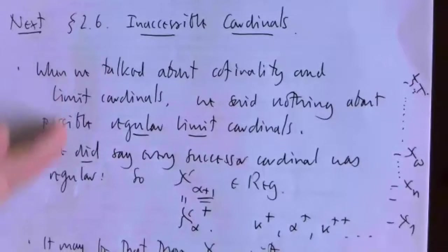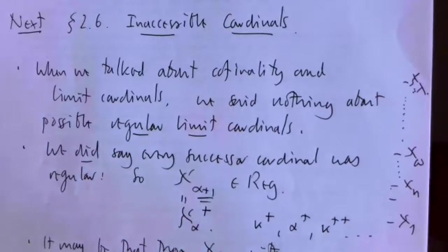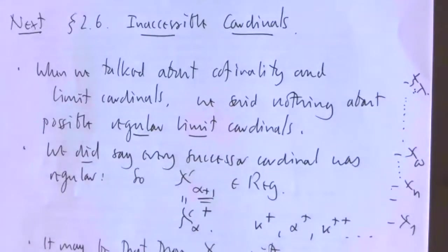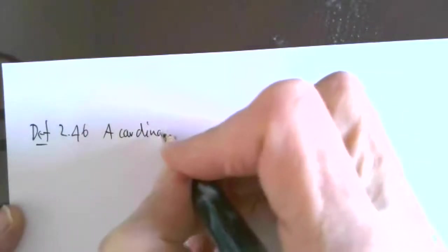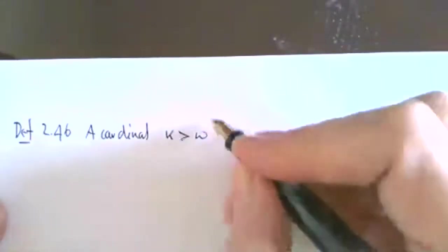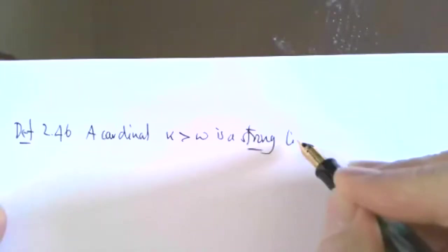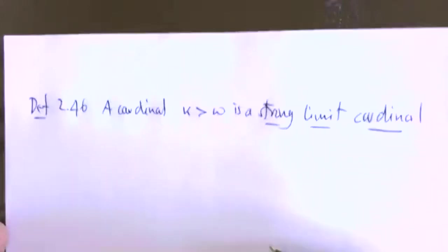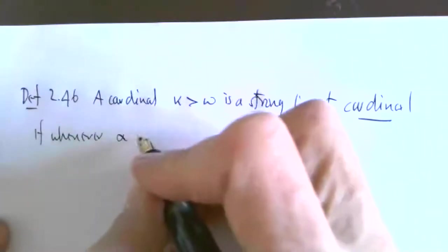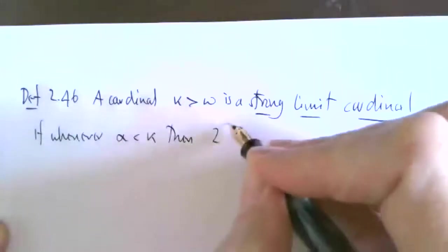I won't go through the preamble about inaccessible cardinals again. I'll move straight to the definition, which is at the top of page 35. Definition 2.4.6: a cardinal kappa bigger than omega is said to be a strong limit cardinal if whenever alpha is less than kappa, then 2 to the alpha is less than kappa.